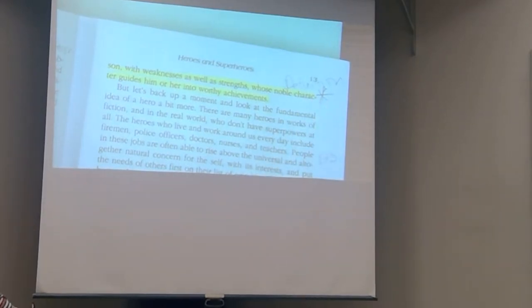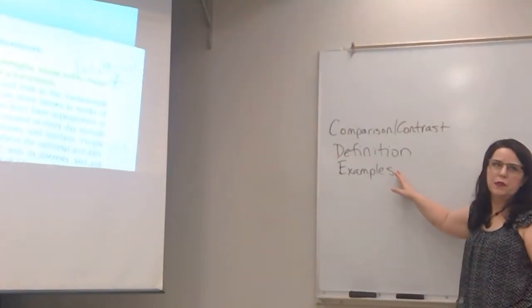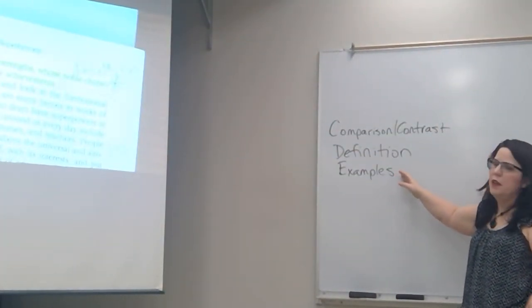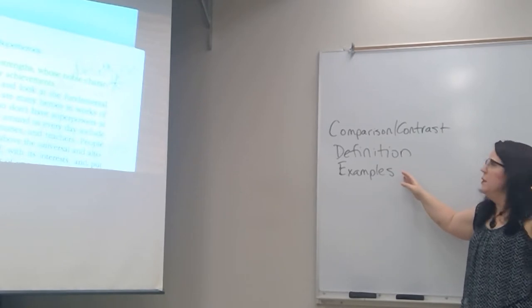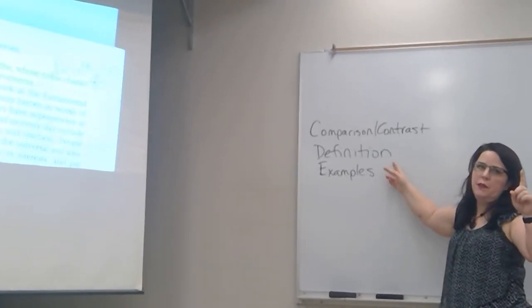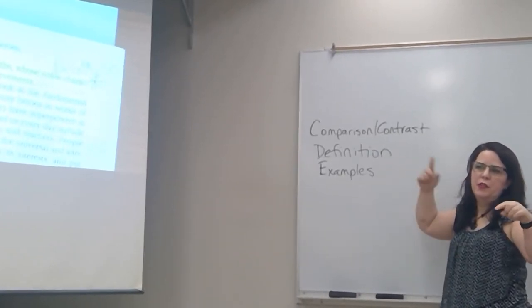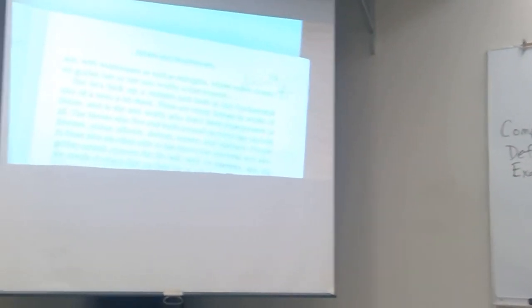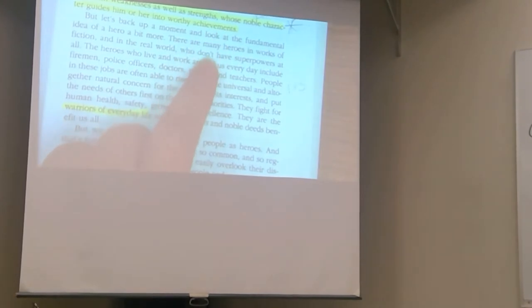This is how this essay cycles. Subclaim, evidence, definition, examples, and we just keep going back through that circle throughout the entire essay. So this whole next paragraph is nothing but examples. He gives examples of heroes, officers, doctors, nurses, teachers.